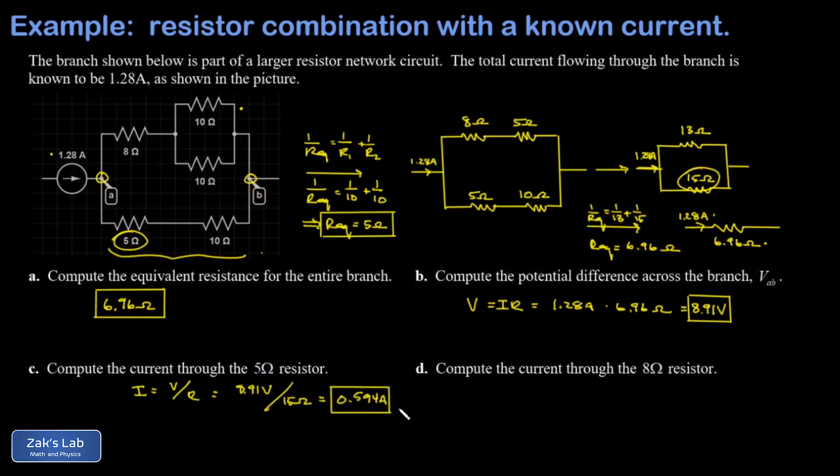Finally in part D we want to get the current through the 8 ohm resistor. That was part of the upper branch of our original network. From my circuit simplification, the total equivalent resistance of that upper branch was 13 ohms and I know the potential difference across it was again 8.91 volts. So we can figure out the current flowing through that upper branch, and I get 0.685 amps, just keeping three sig figs.